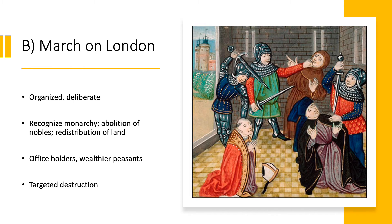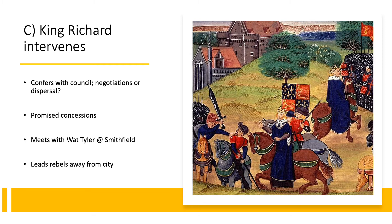They particularly disliked John of Gaunt, who had been active in enforcement; many of his properties were targeted. Flemish merchants were also targeted as representing lost economic opportunities. This army of peasants was massed right outside London, burning some buildings. King Richard and his council took refuge within the Tower of London. The king was only 14 at the time, so the question was how he would address this real challenge. Two possibilities: negotiate with the peasants, or armed military retribution.